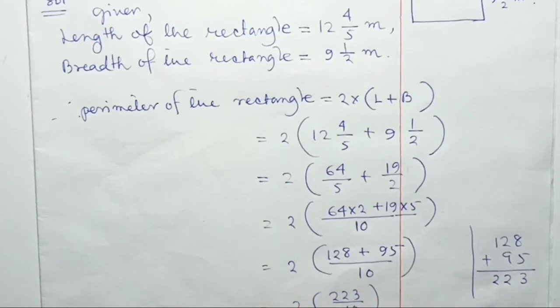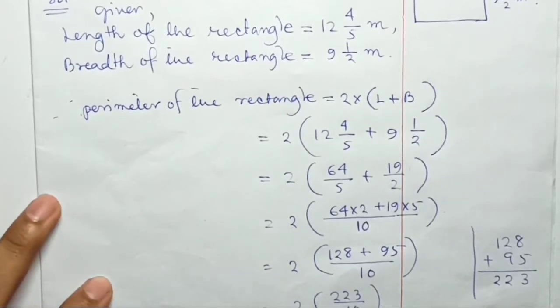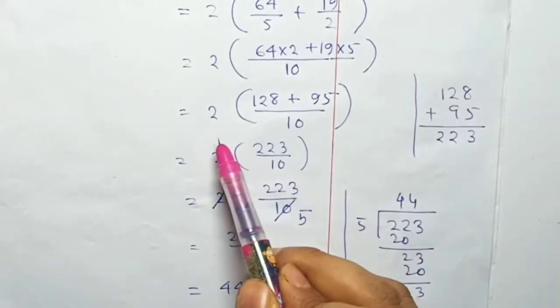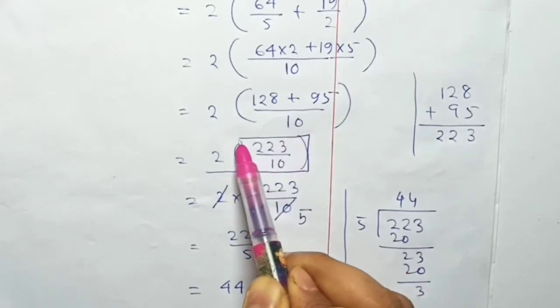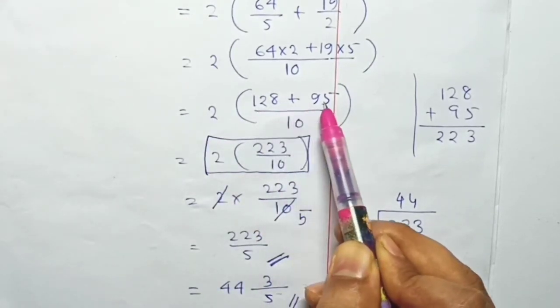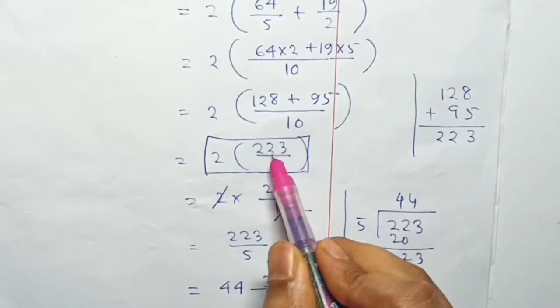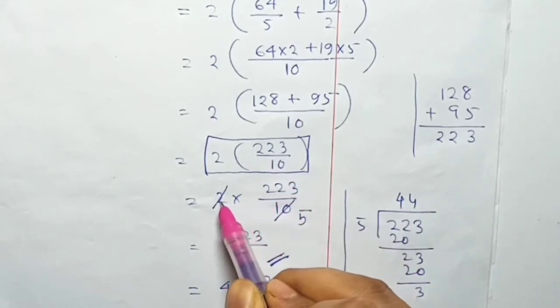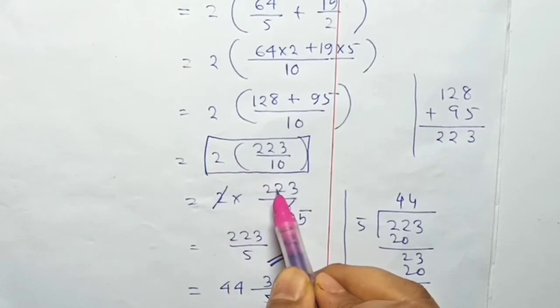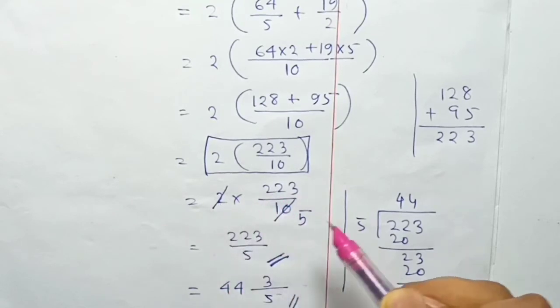128 + 95 = 223. So we have 2(223/10) = (2×223)/10 = 446/10.